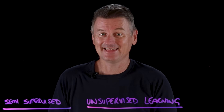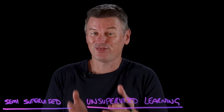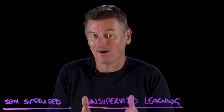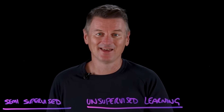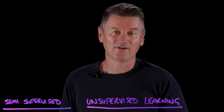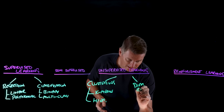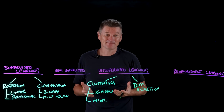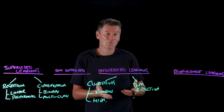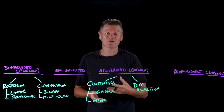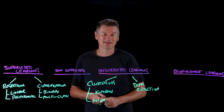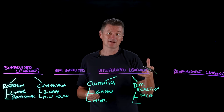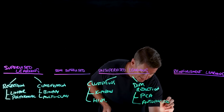For example, you could cluster IT ticket text — the subject and description — into themes like password reset and laptop won't boot, getting broad buckets or fine-grained sub-buckets depending on where you cut the tree. That's useful for auto-routing and spotting new service issue types. Another type of unsupervised learning is dimensionality reduction — algorithms that reduce the complexity of data points by representing them with fewer features, or dimensions, while still preserving meaningful characteristics. They're often used for pre-processing, data compression, or data visualization. Examples include PCA (principal component analysis) and encoders.